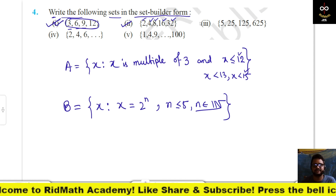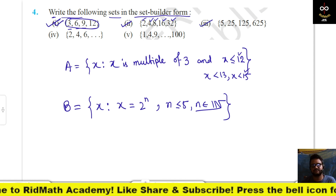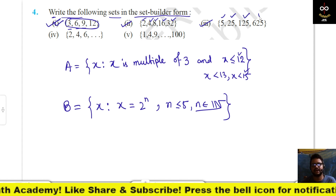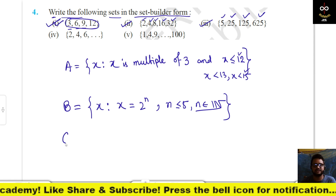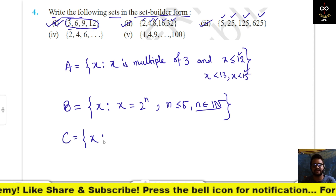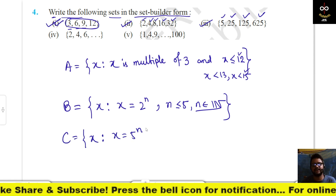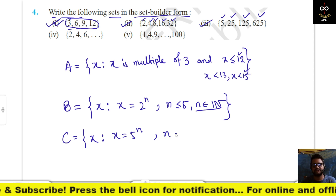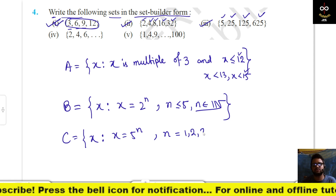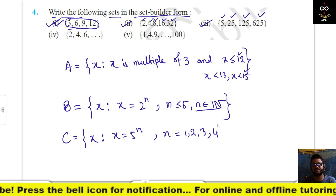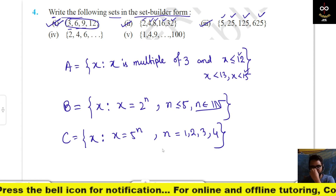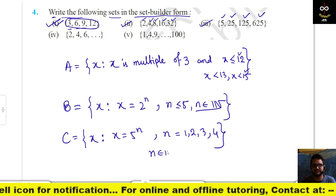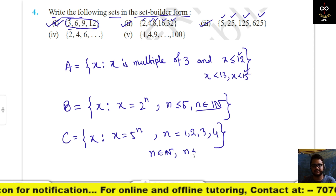Next the set {5, 5², 5³, 5⁴}: this is also similar — C = {x : x = 5ⁿ, n = 1, 2, 3, 4}, or equivalently n ∈ ℕ and n ≤ 4.